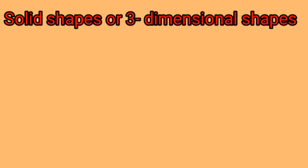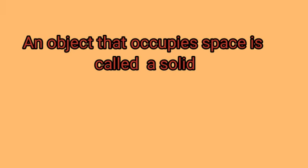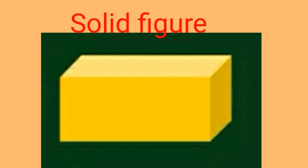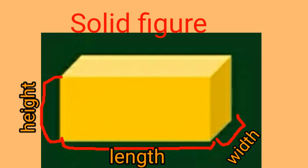Solid shapes are three dimensional shapes. An object that occupies space is called solid shapes. For example, look at this brick. This is a solid. This brick has fixed shape. It has length, width, and height. It is hard. We cannot change its shape by pressing it.